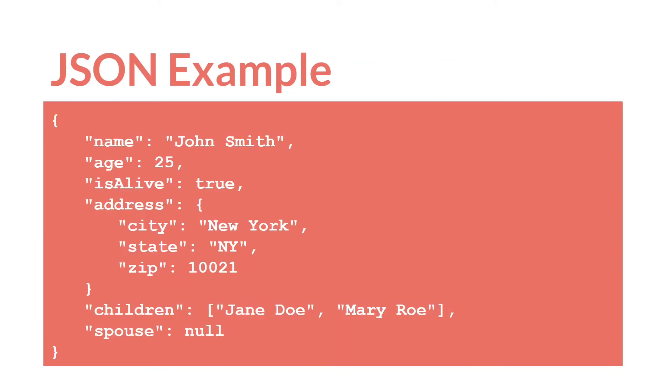So here's a JSON example. Note that we have our starting and closing brackets. Then we have our key value pairs where our keys are always enclosed in quotation marks. So we have name, John Smith. We have age, 25. Is alive, a boolean value, true.